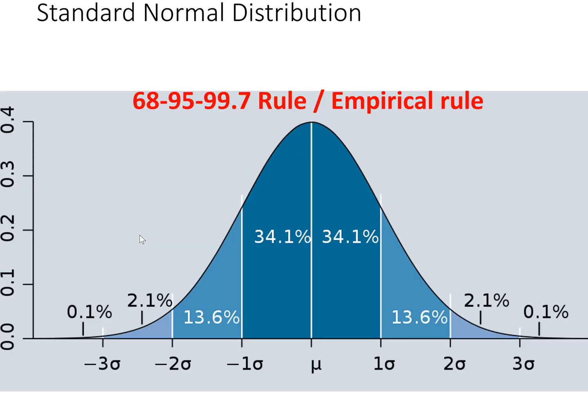The standard normal distribution follows what's called the empirical rule, sometimes also called the 68-95-99.7 rule. About 68% of cases in a normally distributed variable will fall within plus or minus one standard deviation of the mean. About 95% of cases will fall within plus or minus two standard deviations of the mean. And almost all cases — about 997 out of 1000 if randomly sampled — will fall within three standard deviations, plus or minus, from the mean.